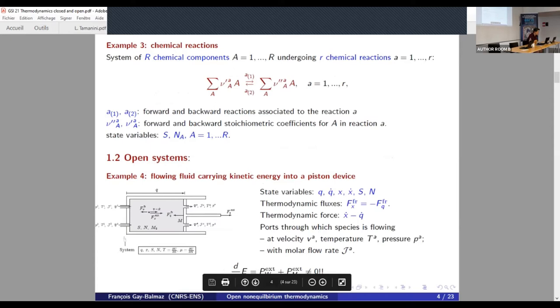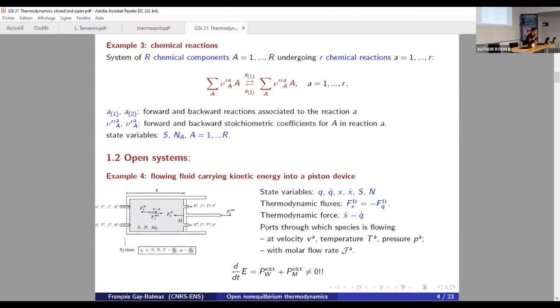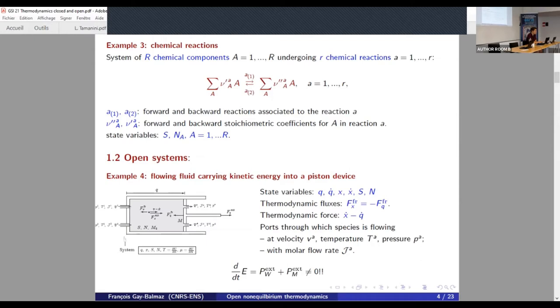Another case is the case of chemical reactions. For instance, here you have R chemical component that can undergo several kinds of chemical reactions. This is usually denoted like this, where here you have the forward and backward stoichiometric coefficients. So here again, the state variable for this problem are the entropy, I assume a uniform entropy, not in time, but for all the species, and the number of moles of each of the species.